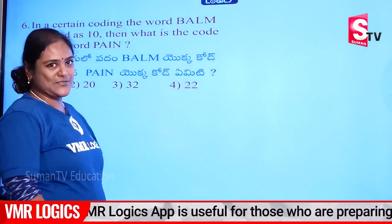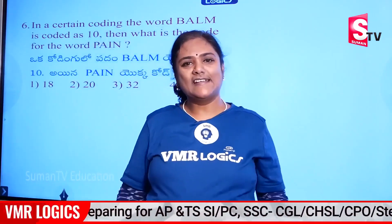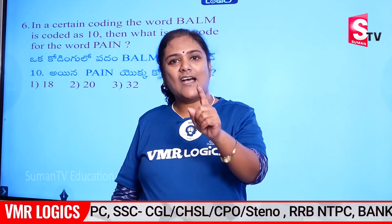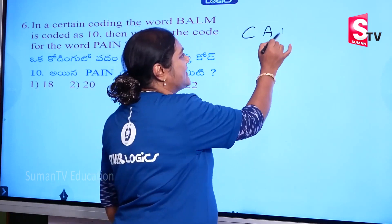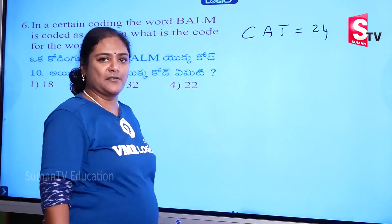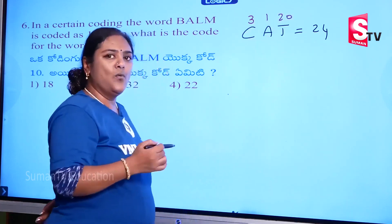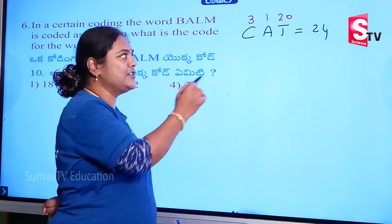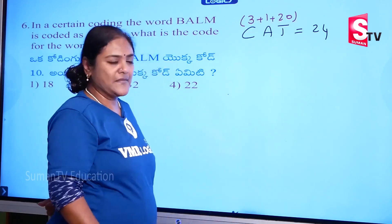Now next model: number coding. For dear friends, number coding — general: place value based. A place value key — each letter has a number relation. For example, let your word be CAT. CAT is equal to 24. C, A, T — place values: 3, 1, 20. So 3 plus 1 plus 20 = 24. Fantastic — that's easy!